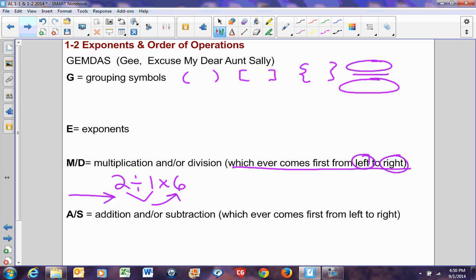So if we are going to evaluate an expression using the proper order of operations, do anything within grouping symbols first, then exponents, then multiply and divide, then add and subtract. Let's look at some examples.